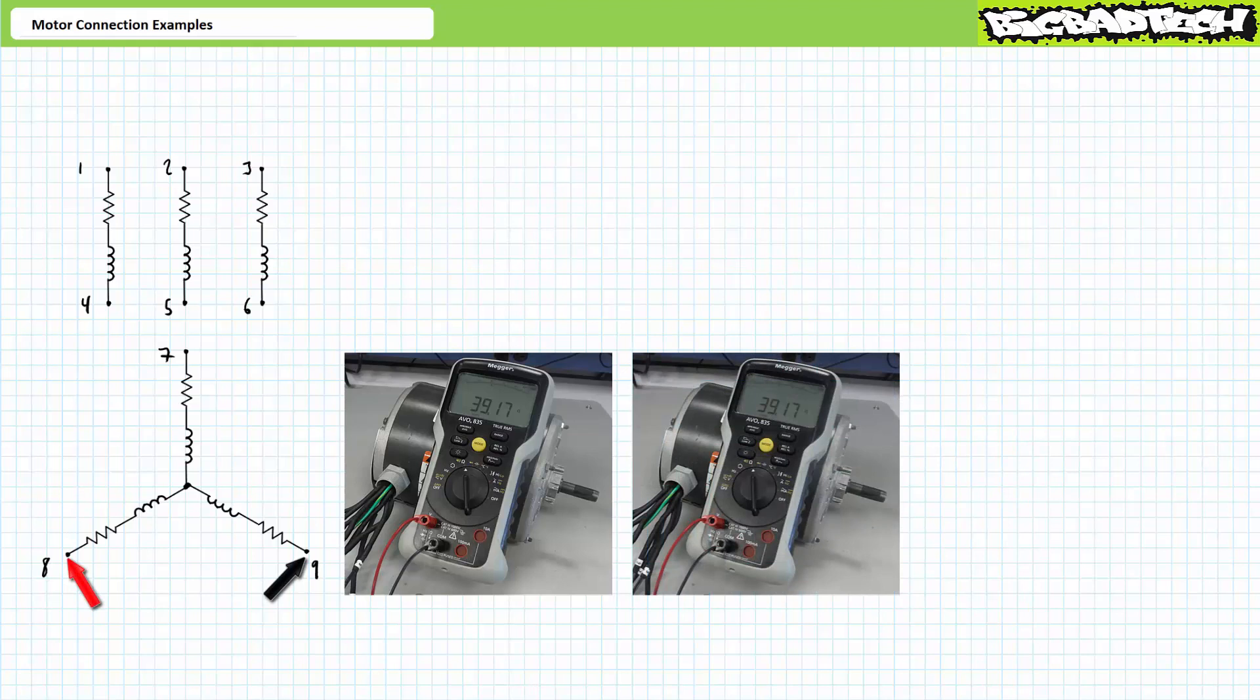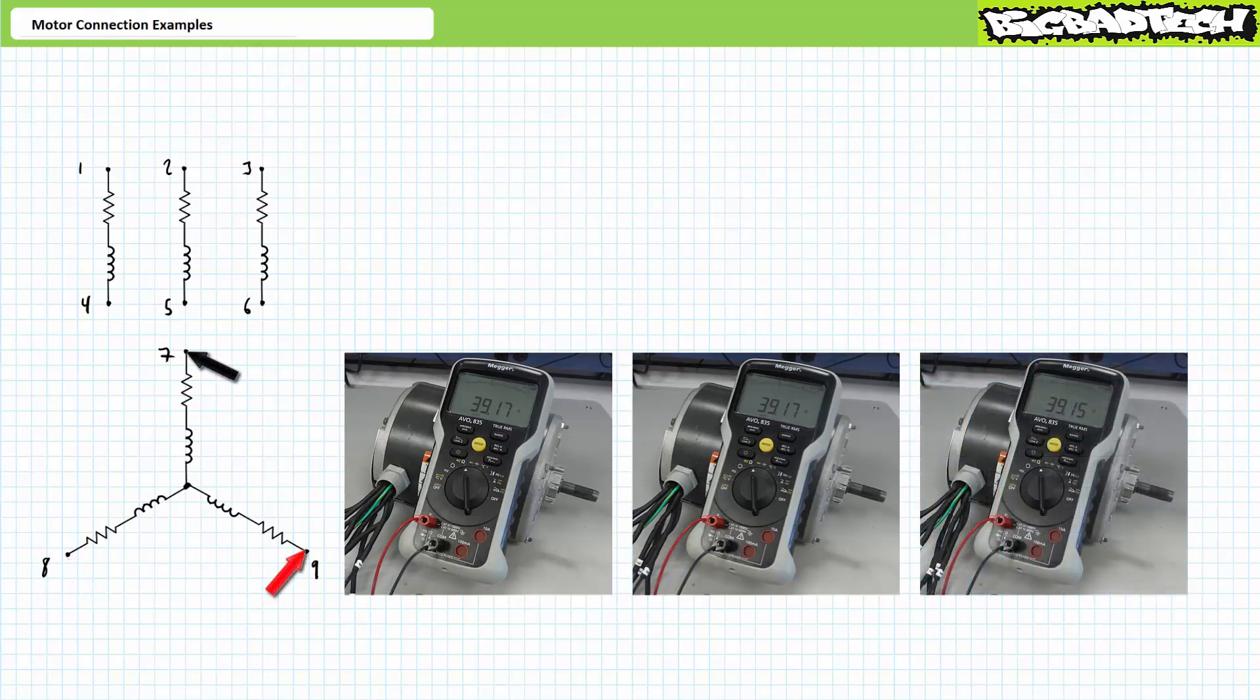Similarly, an ohmmeter between terminals eight and nine sees winding eight and nine in series. As previously, the ohmmeter sees a resistance of roughly 40 ohms which is consistent with a series combination of two identical 20 ohm windings. Finally, an ohmmeter between terminals nine and seven sees winding nine and seven in series. The ohmmeter sees a resistance of roughly 40 ohms which is again consistent with a series combination of two identical 20 ohm windings.